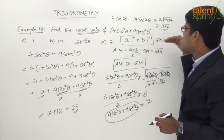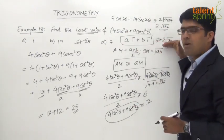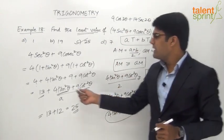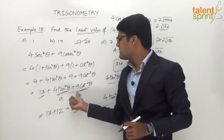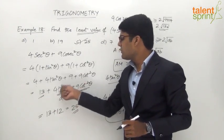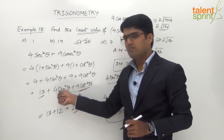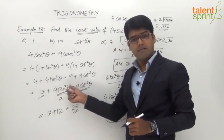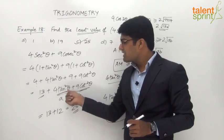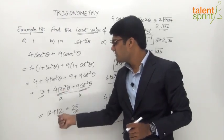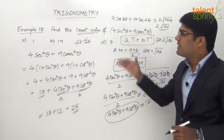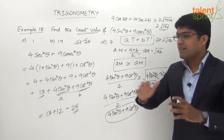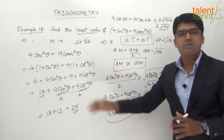Remembering this method makes answering such questions very easy. For the original problem: 4 + 9 = 13, and 2√(4×9) = 2√36 = 2×6 = 12. So 13 + 12 = 25 is the answer. That's how we arrive at the least value in a step-by-step process.